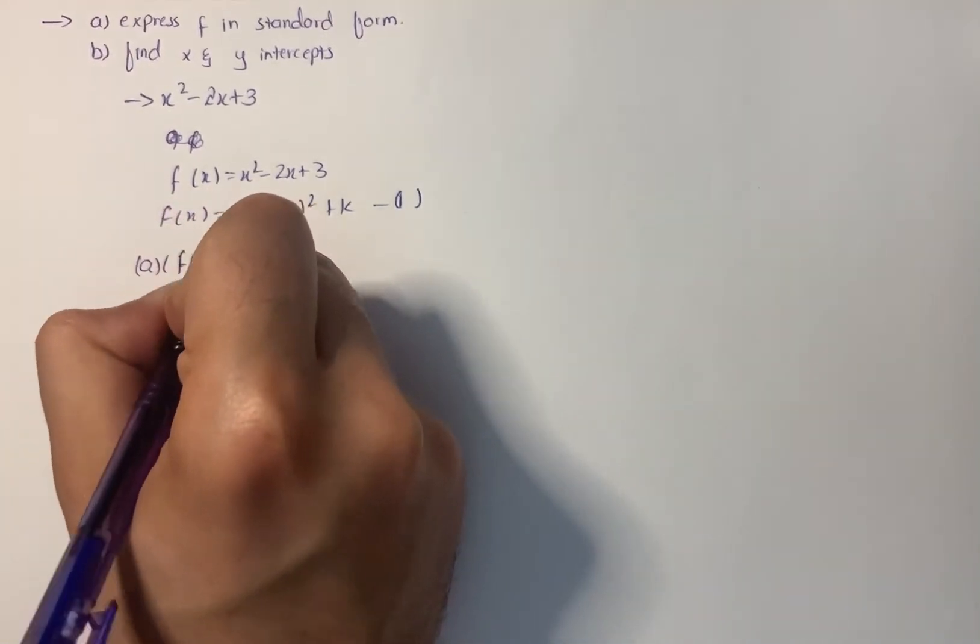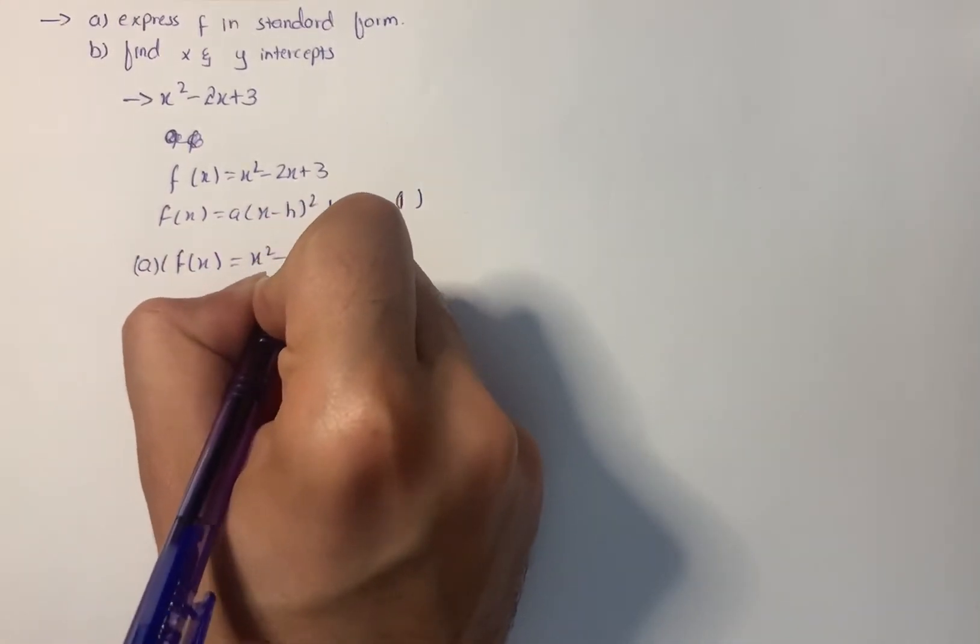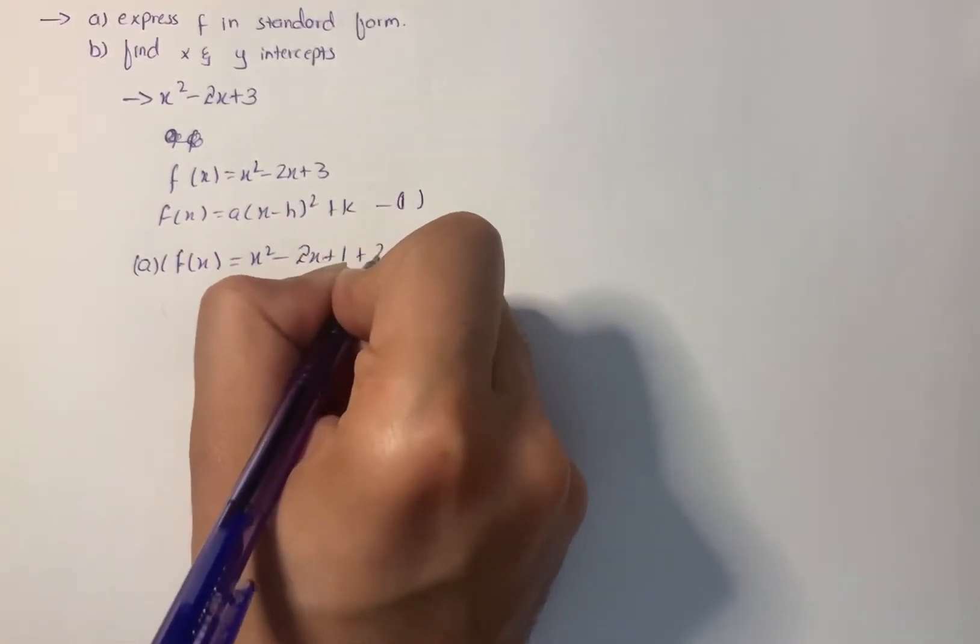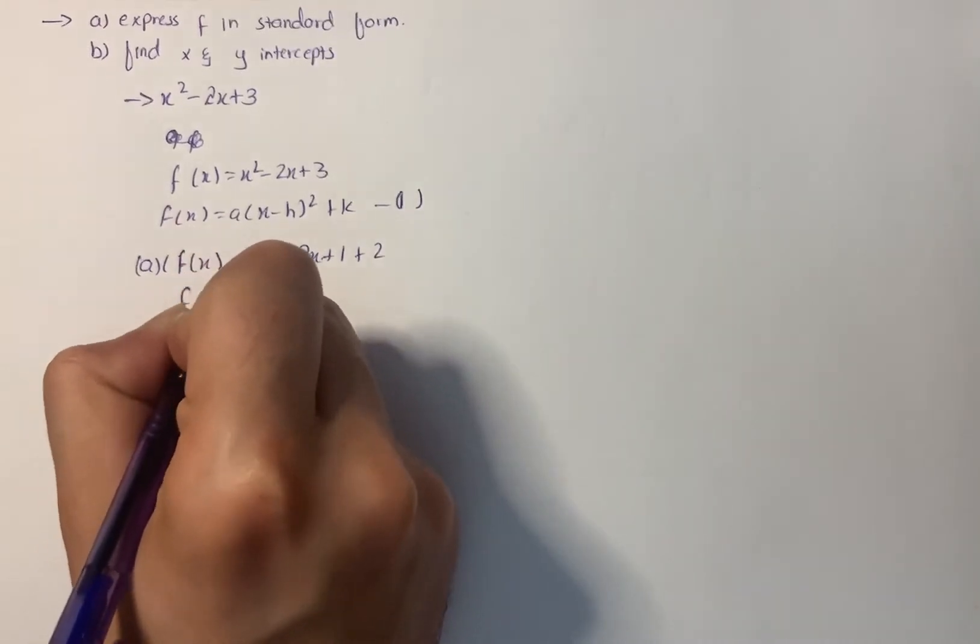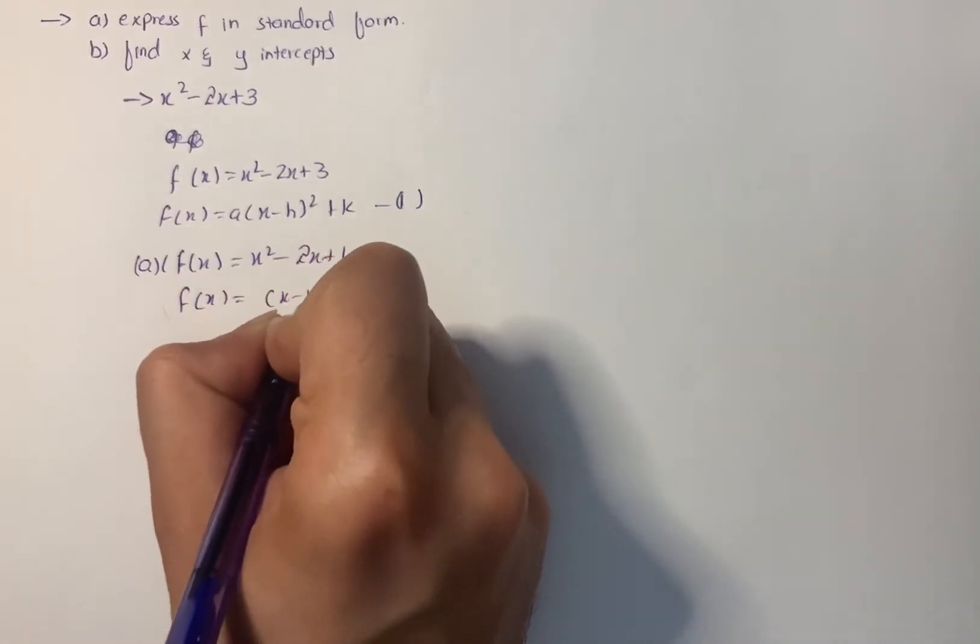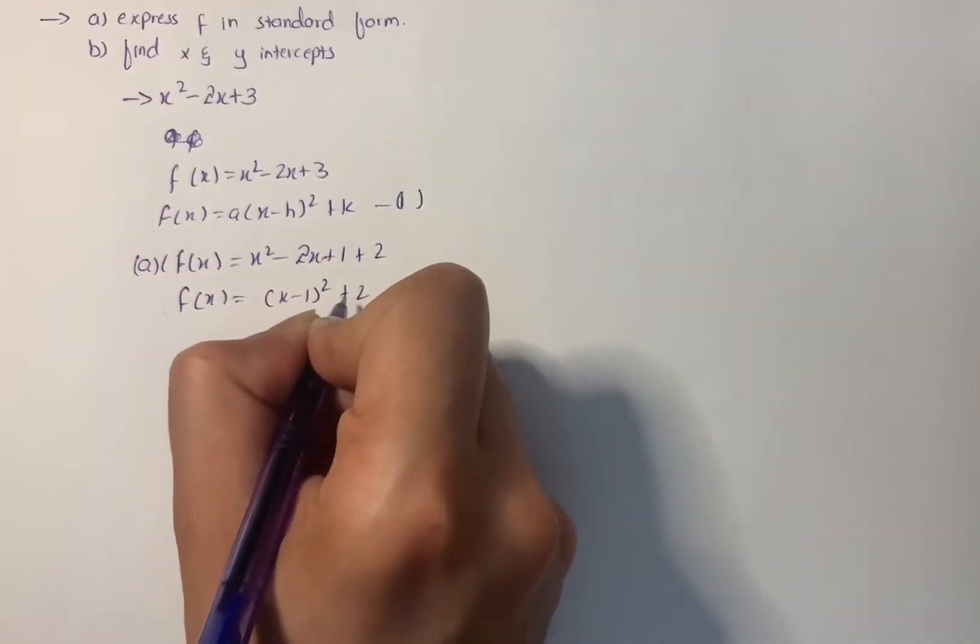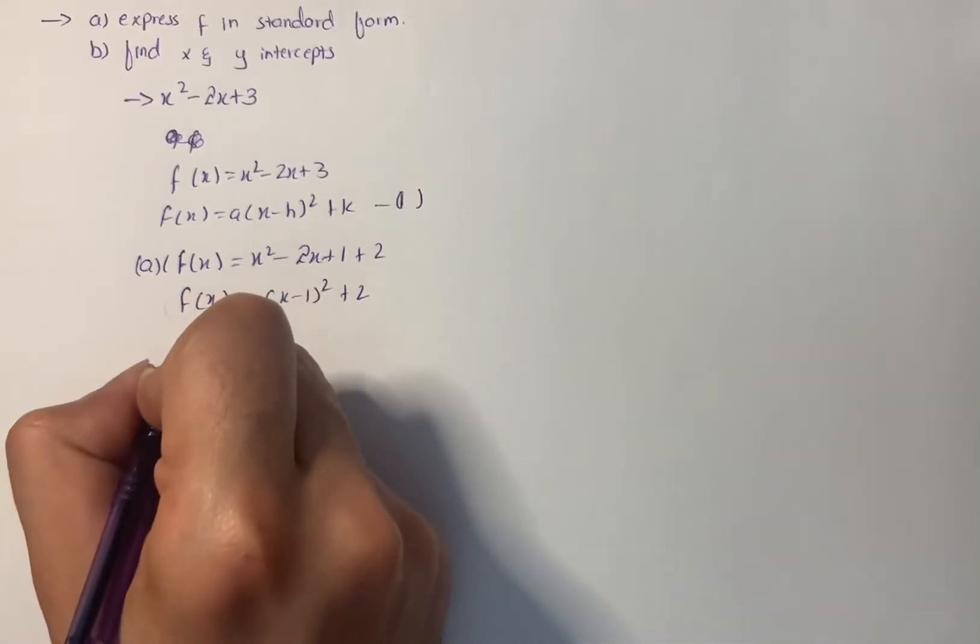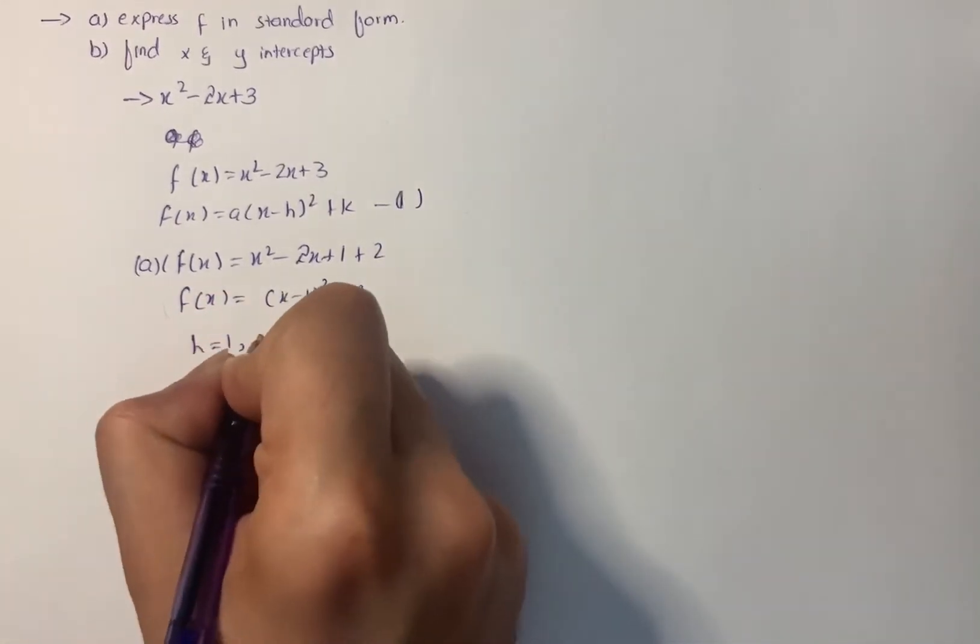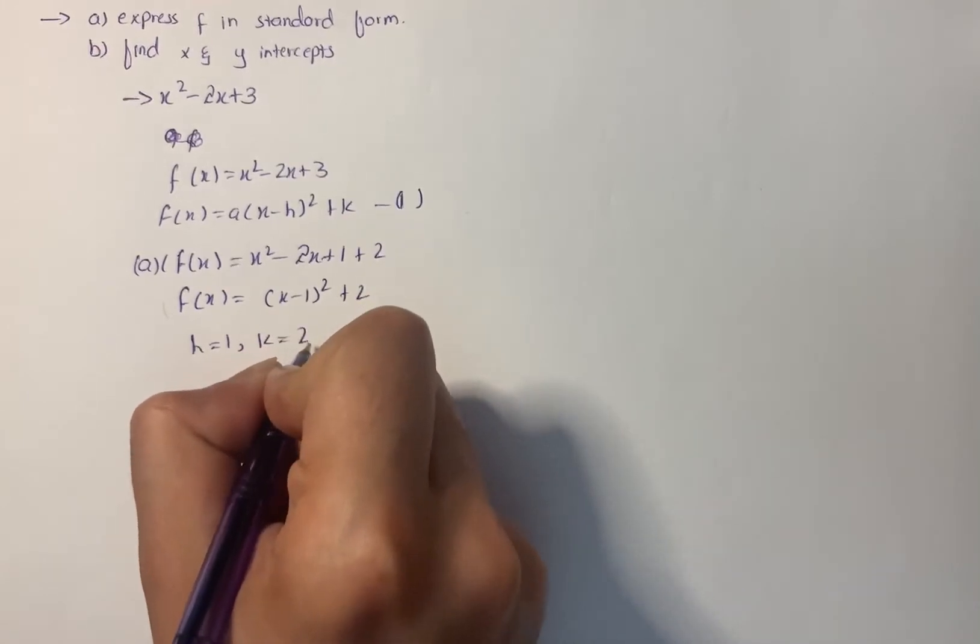f(x) = x² - 2x + 1 + 2, so the function becomes (x - 1)² + 2. On comparing it with equation 1, we have h = 1 and k = 2.